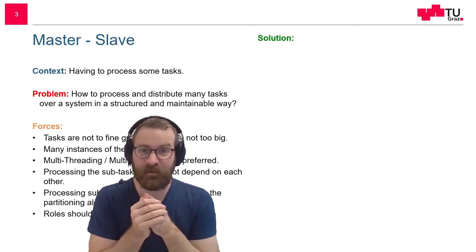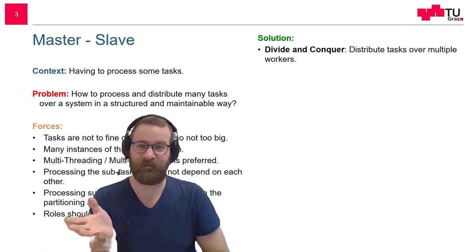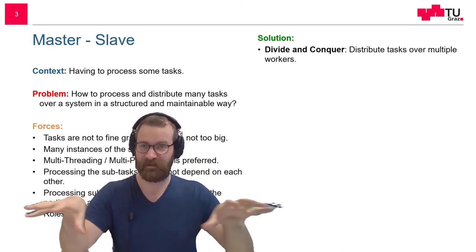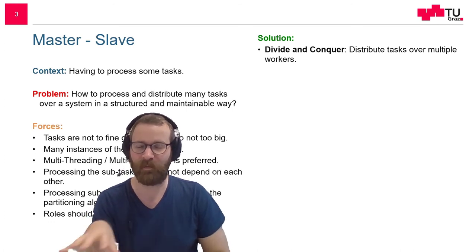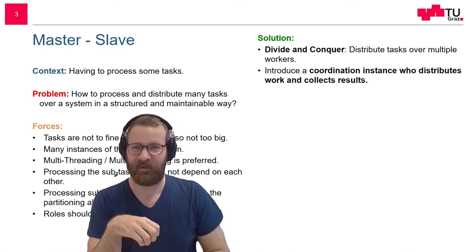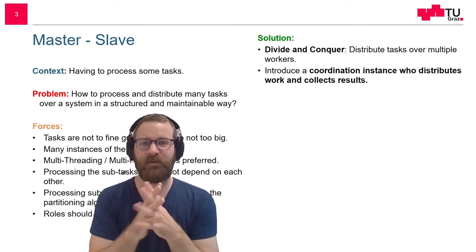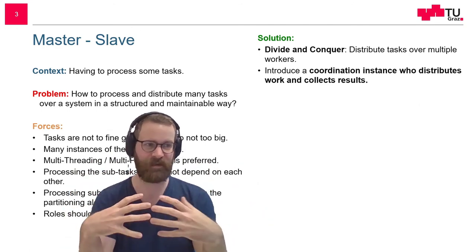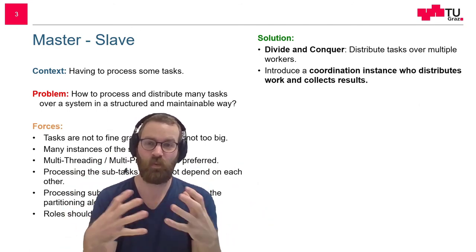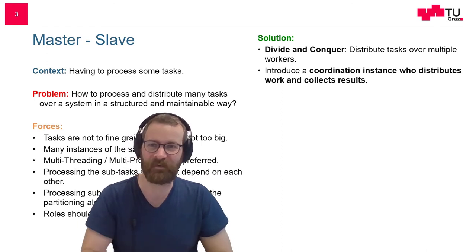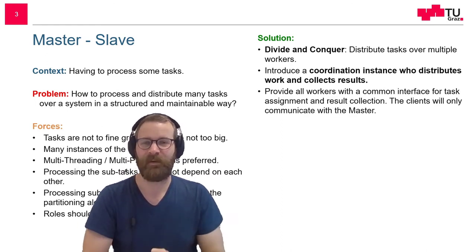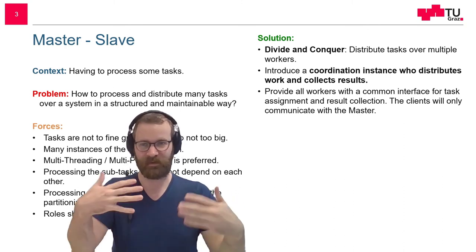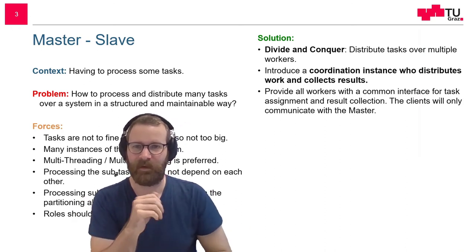So what is the solution? Divide and conquer. We take all those tasks and distribute them amongst workers. But in order to do this, we have to introduce some instance who distributes the work and collects the work again after it's done. This is the Master — or in the new terms, this is the Coordinator. And all our workers need to have some common interface in order that the coordinator can communicate with them.